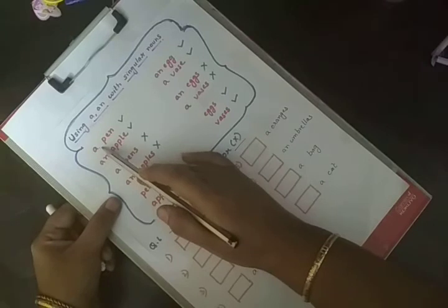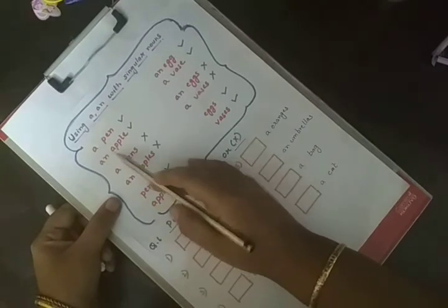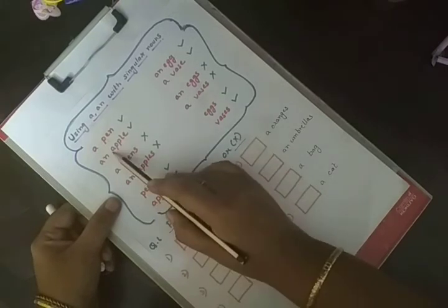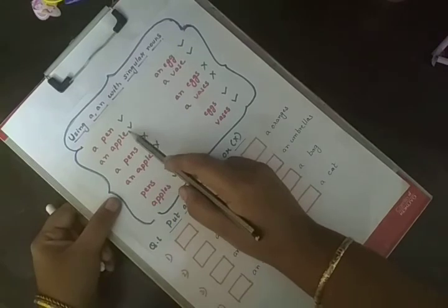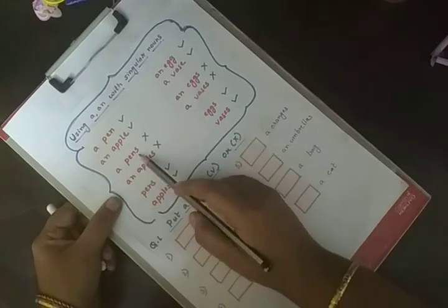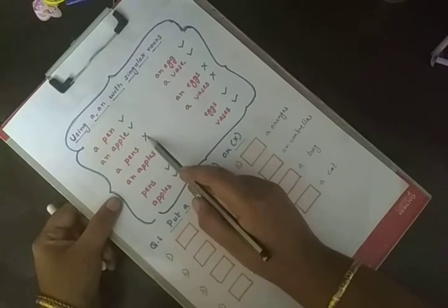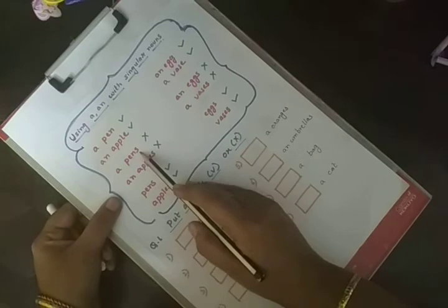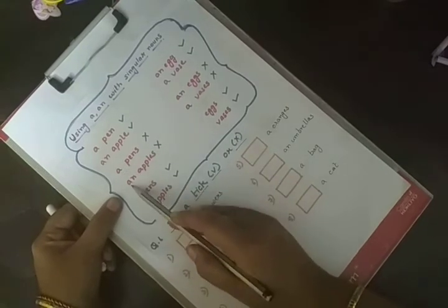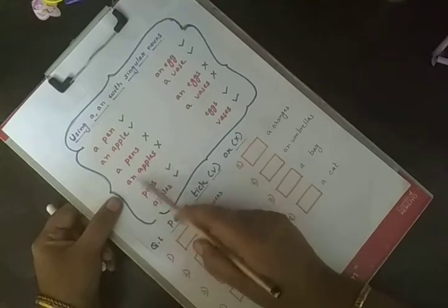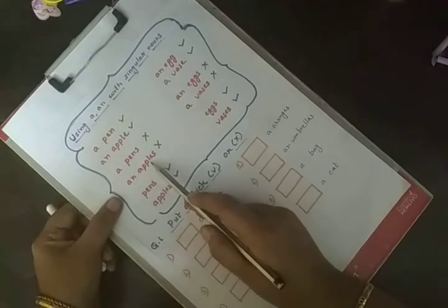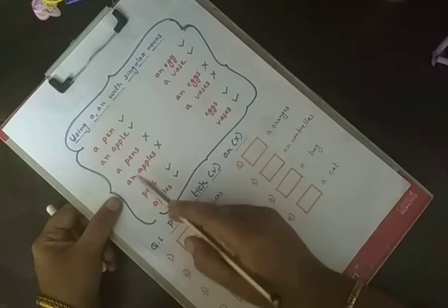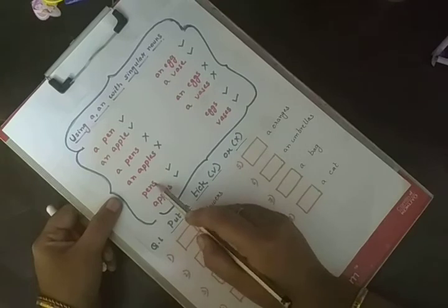Like if I write a pen, that is correct. An apple, then it is correct. Because P is consonant sound, so A. And A is vowel sound, then AN. But if I write a pens, then it will be wrong. Pens means many pens. So I will never use A or AN before pens and apples. If we don't use the article, pens and apples, they will be correct.